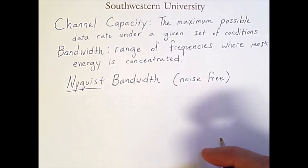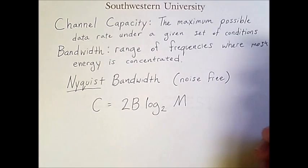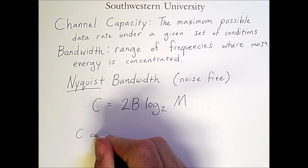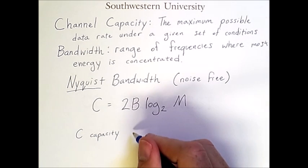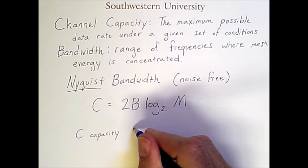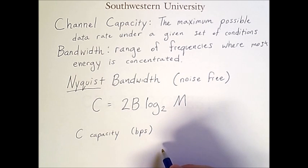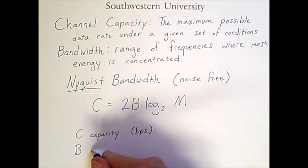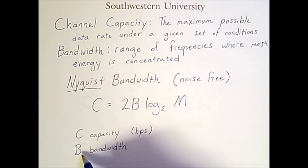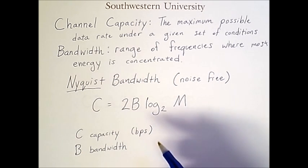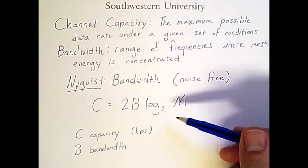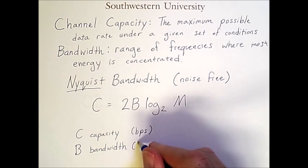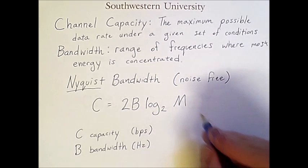But if we assume we are noise-free, then the following formula applies. In this formula, C is the capacity. And we will measure this in BPS, bits per second. The B stands for bandwidth. And because the bandwidth is the result of subtracting one frequency from another, or subtracting hertz from hertz, therefore we also measure the bandwidth in hertz.